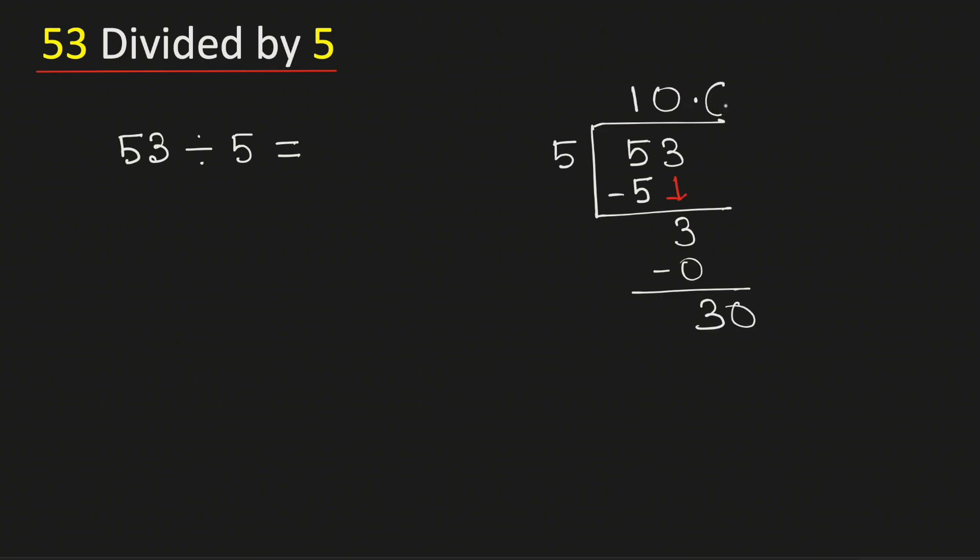Now 5 times 6 is 30. Subtract, we get 0. As we have obtained the number 0, so we will stop. Therefore, 53 divided by 5 is equal to 10.6, and this is our final answer. Thank you for watching.